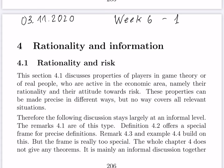Section 4.1 discusses assumptions about players in game theory, or also players in the real world who are active in the economic area, namely their rationality and their attitude towards risk. One can make these properties precise in some ways, but no way covers all relevant situations. This is a rather short chapter and the discussion will stay largely at an informal level.